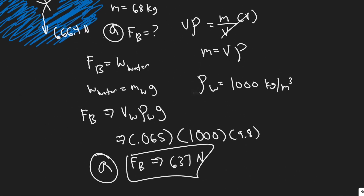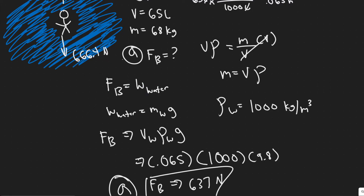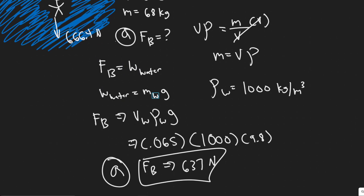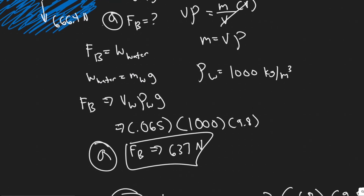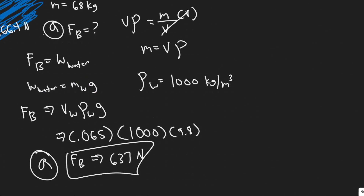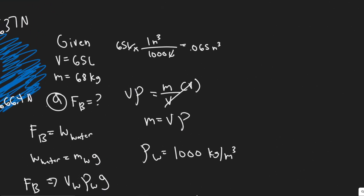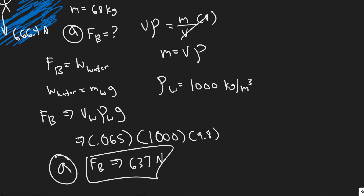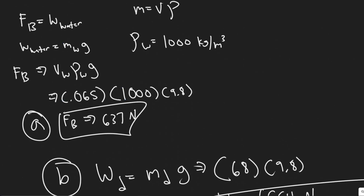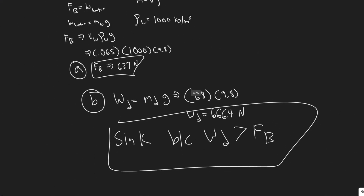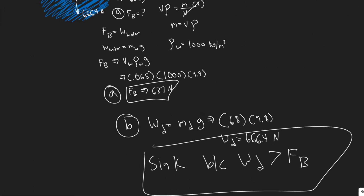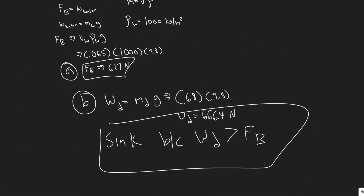Just a quick recap: the buoyancy force equals the weight of the water displaced; the weight of water is mass of water times gravity; and we replace the mass of the water with density times volume. We had to convert the volume into meters cubed to get the units right, then it was just a matter of plugging in. For Part B, the weight of the diver is greater than the buoyancy force, so she gets pulled down. Hopefully you found this video useful.